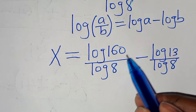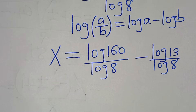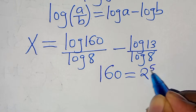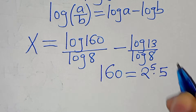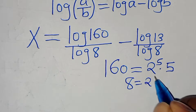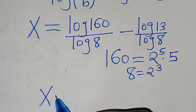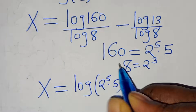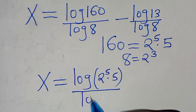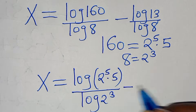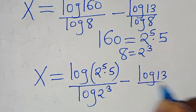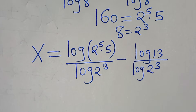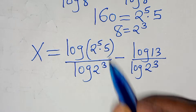We can express 160 as 2^5 times 5, and 8 as 2^3. So x equals log(2^5 · 5) divided by log(2^3), minus log(13) divided by log(2^3).